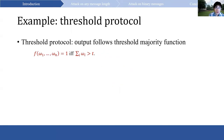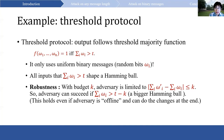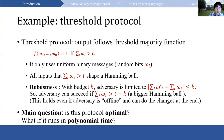Let's see what our question means by going over a simple protocol — the threshold protocol. The output bit follows the threshold majority function: the output equals 1 if and only if the summation of all messages omega_i is larger than t. We suppose it takes only uniform binary messages, and the number of inputs whose summation is larger than t is the size of a Hamming ball. This simple protocol is robust: with budget k, the summation can only change by k, so the adversary can succeed if the summation is larger than t minus k, which corresponds to the bigger Hamming ball. This holds even if the adversary is offline and can make changes at the end.